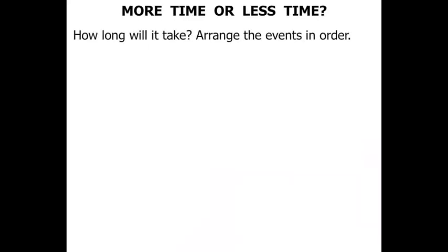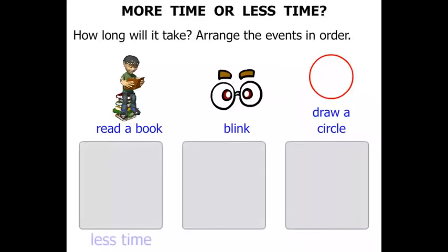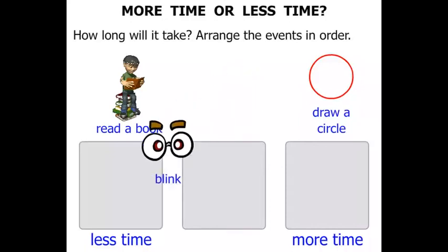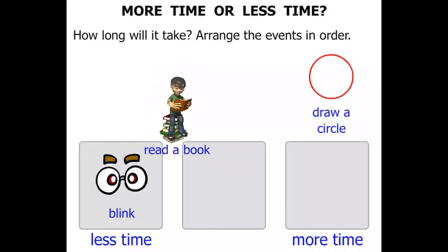How long will it take? Arrange the events in order. We've got reading a book, a blink, or draw a circle. We're going to order them from less time to more time. Well it's a blink — it doesn't take very long at all. Reading a book would take the longest time, and draw a circle somewhere in between.